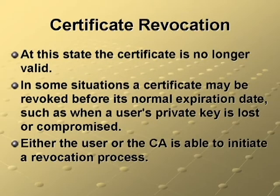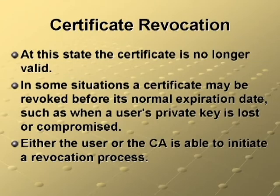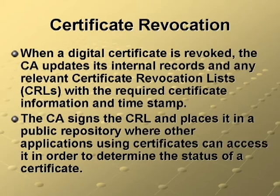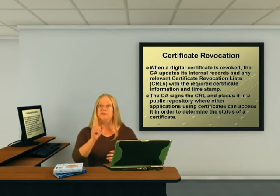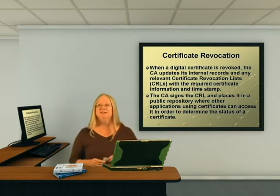When a certificate is revoked, it's no longer valid. In some situations, a certificate may be revoked before its normal expiration date, such as when a user's private key is lost or compromised. Either the user or the CA is able to initiate this revocation process. When a digital certificate is revoked, the CA updates its internal records and any relevant certificate revocation lists (CRLs) with the required certificate information and a timestamp. The CA signs the CRL and places it in a public repository where other applications using certificates can access it to determine the status of a certificate. The CRL is a critical element that provides security and integrity of public key infrastructure, and the identifying information used on the CRL is the serial number of the certificate.